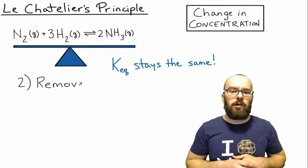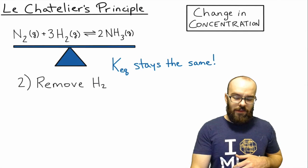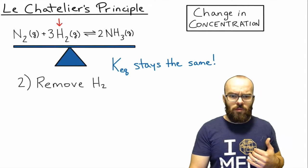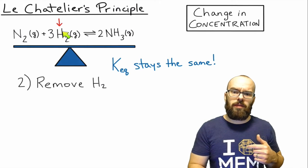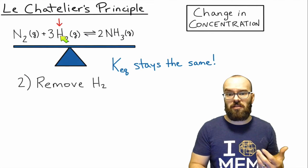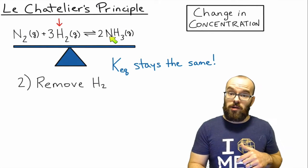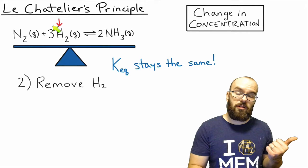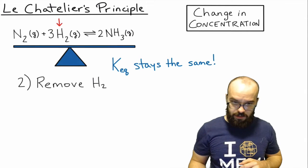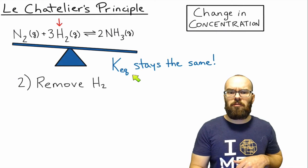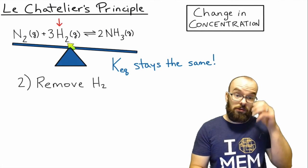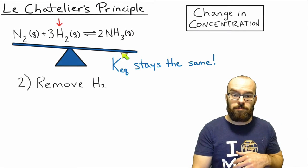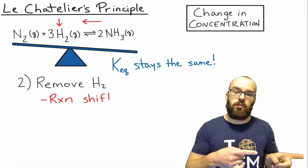What if we remove hydrogen gas? This is like removing people from the reactant side — now there's more space in Country A. Ammonia will decompose and form more hydrogen gas and nitrogen gas, shifting the reaction to the reactant side. By removing H₂, the seesaw is lower on the ammonia side, so it shifts toward the left to rebalance.